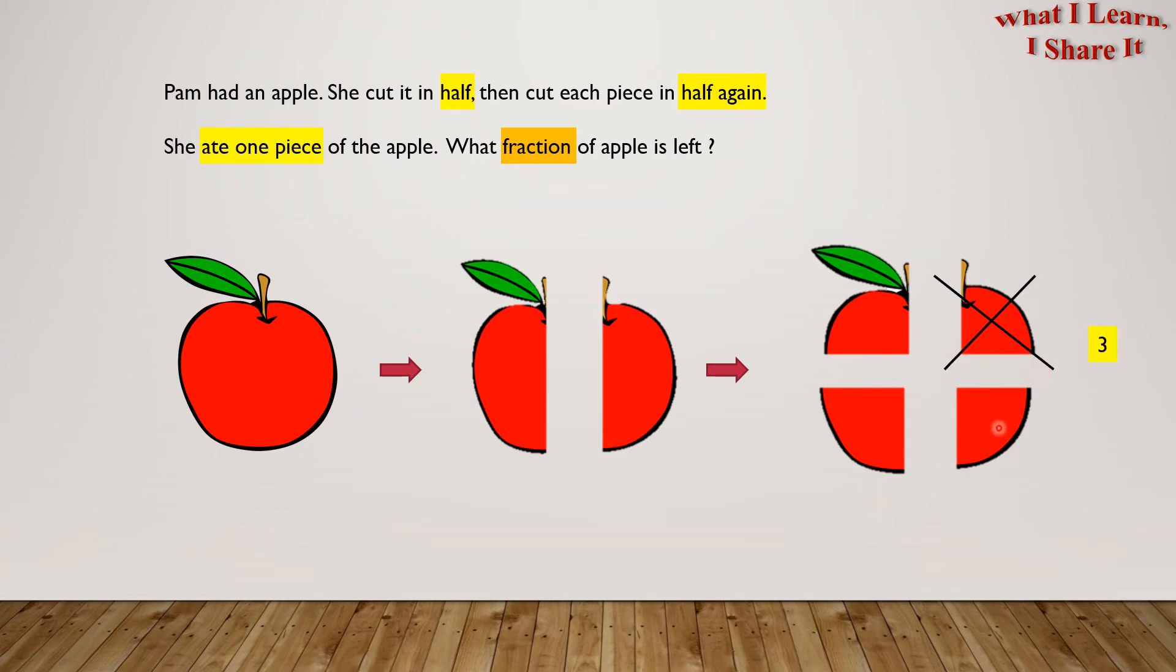So, one, two, three pieces are left out of the four that were originally there. So, three-fourths of the apple is left. Yay! We solved the problem!